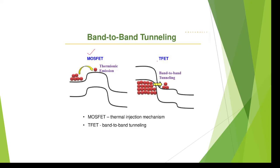This is the traditional normal MOSFET and this is the tunneling field effect transistor. In the normal MOSFET, the distance between source and drain is very high, so it requires more than 60 millivolts to break the junction. But in T-FET, the energy gap between source and drain is very small — they are very close — so even less than 60 millivolts will break the junction and start current flow.